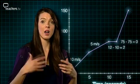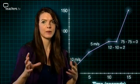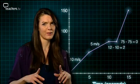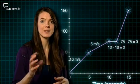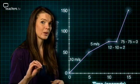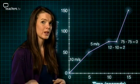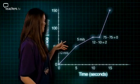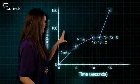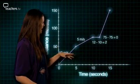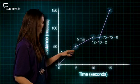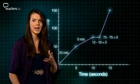Distance-time graphs are graphs which plot distance against time. That sounds a bit obvious, but interpreting them can be slightly more difficult, and I do think it's something worth knowing about. Now I could show you a graph like this, but first let's get our head around the axes and how they're labelled.